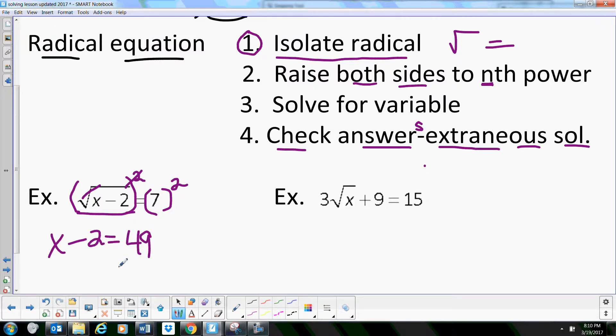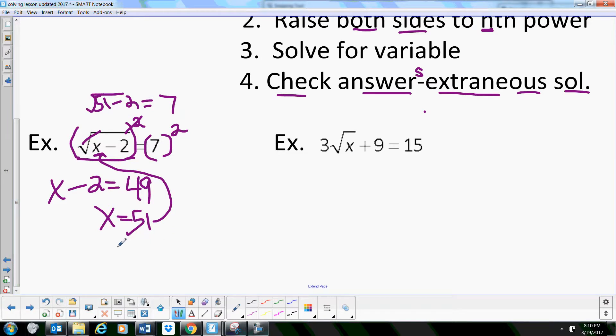Then add 2, and you get 51. So x is 51. Let's check: 51 minus 2 is 49, and the square root of 49 is indeed positive 7. So that one checks out, and the solution is good.